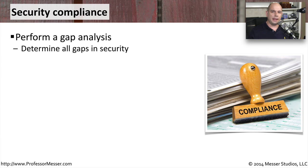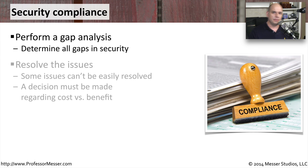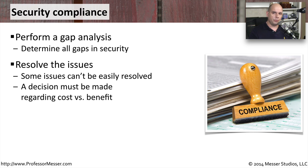The first step to complying with these security requirements is to understand where all of the gaps currently exist in your security. Without understanding those gaps, you're going to have no idea how to apply security controls. Once you have your list, you can start resolving some of those security gaps. Sometimes you can't apply a type of technology to resolve a particular issue, or resolving that problem may involve a lot of money. In those cases, you have to balance out what the business requirement is with the costs associated with resolving that security concern.